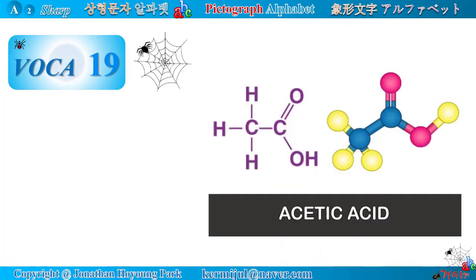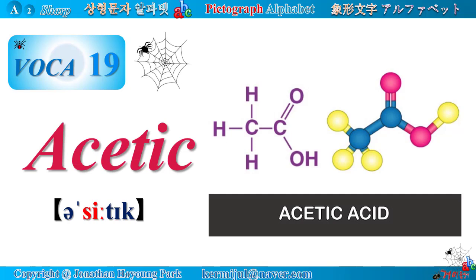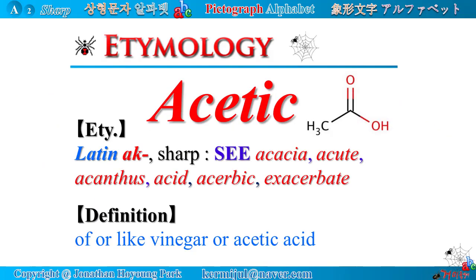Vocabulary number 19: Acetic. Acetic acid has the chemical formula CH3COOH. Etymology: 'Acetic' is derived from the Latin root 'ac-', meaning sharp. There are many related words containing this root, such as acacia, acute, acanthus, acid, acerbic, exacerbate, etc.